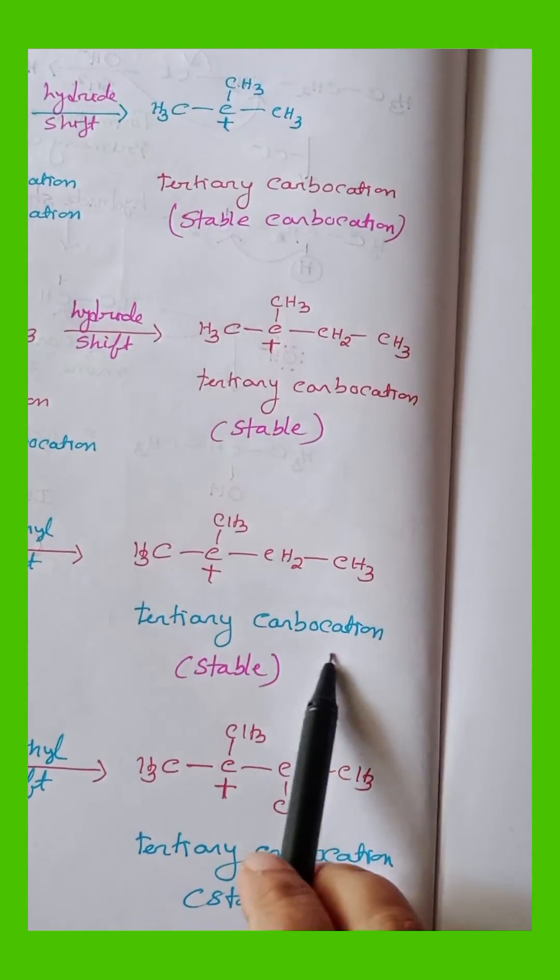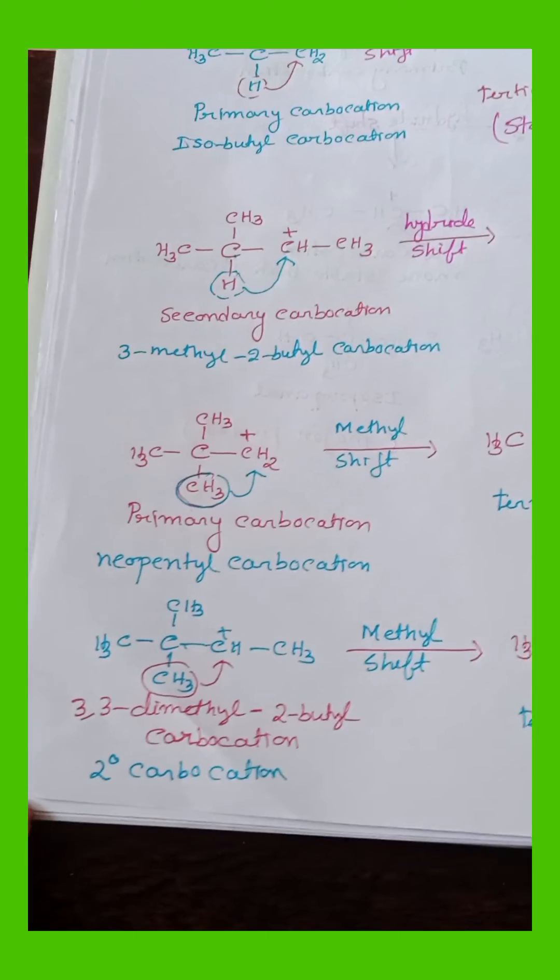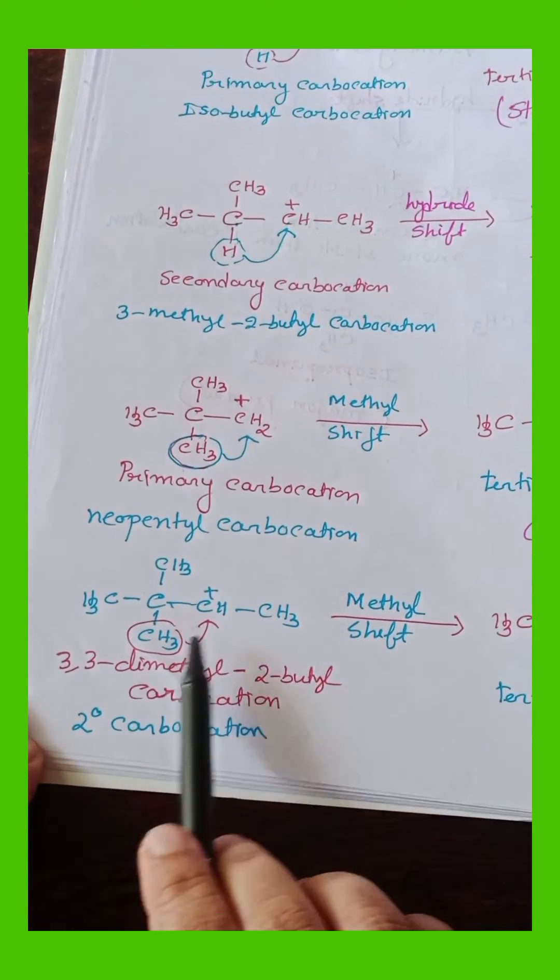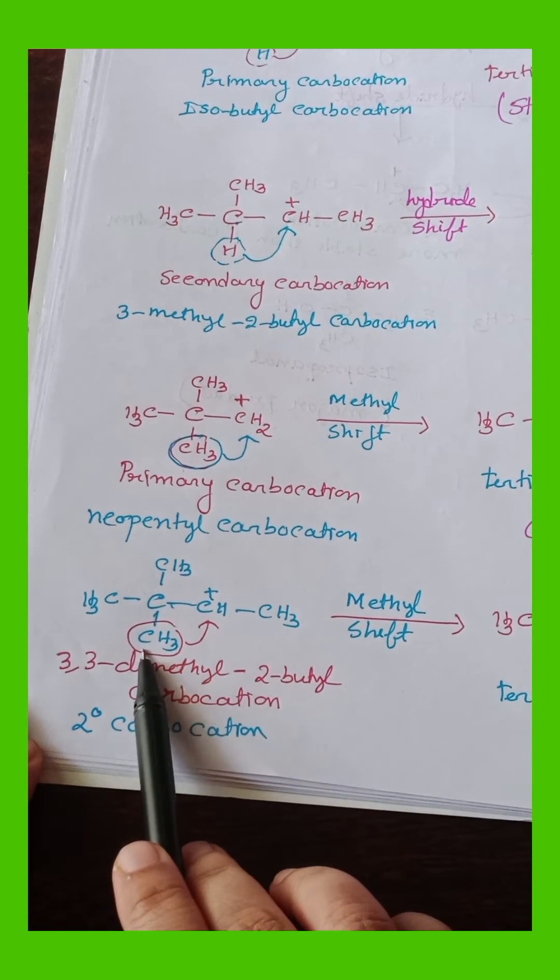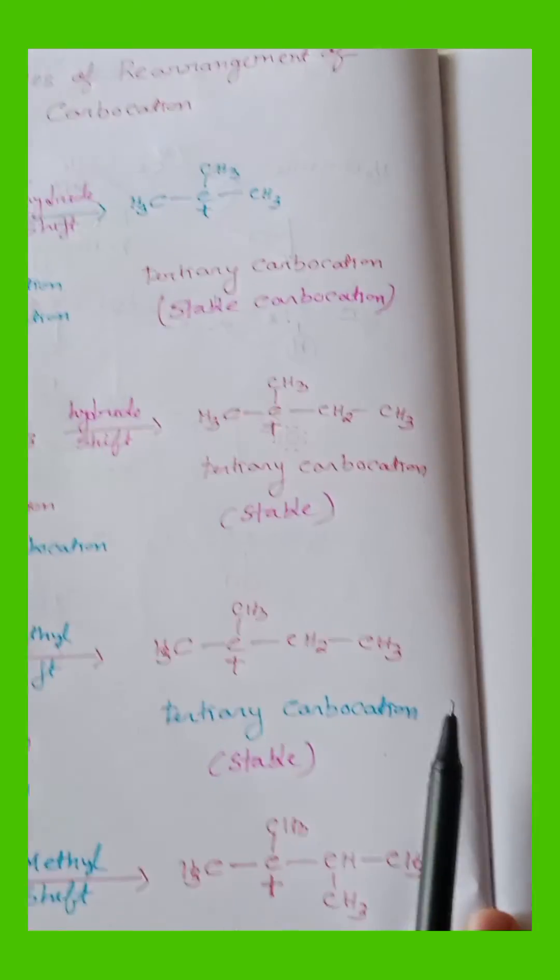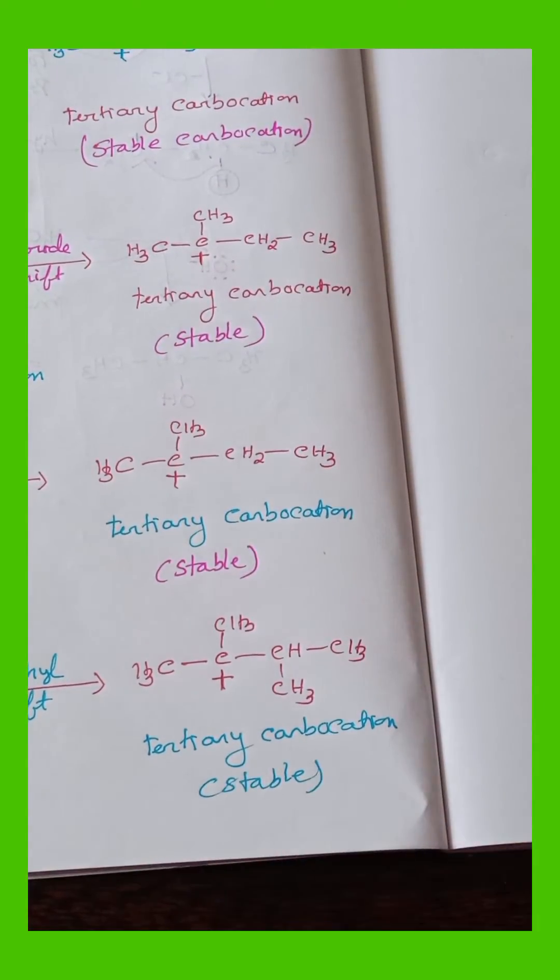Last example is 3,3-dimethyl-2-butyl carbocation. It is a 2-degree carbocation. Here also methyl shift takes place and we get a stable 3-degree carbocation.